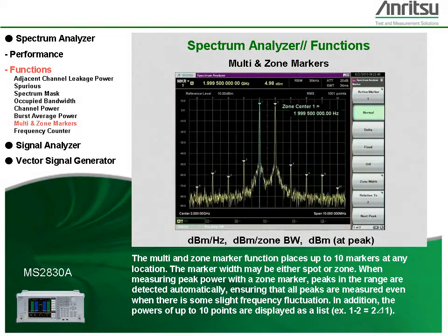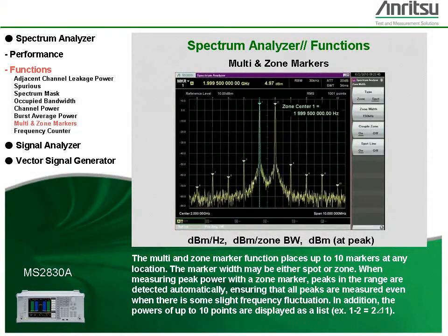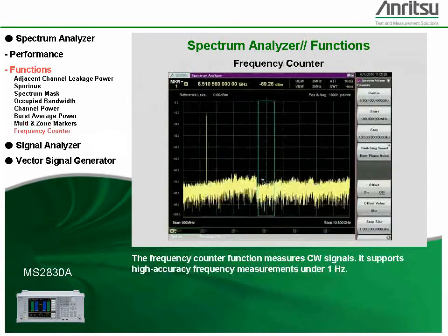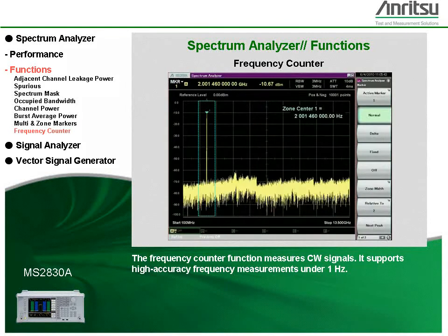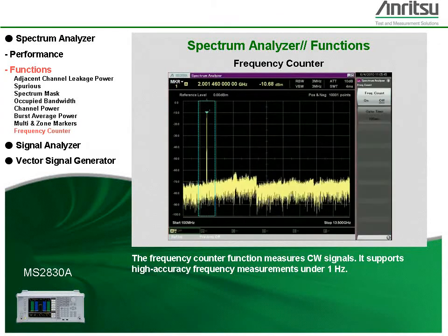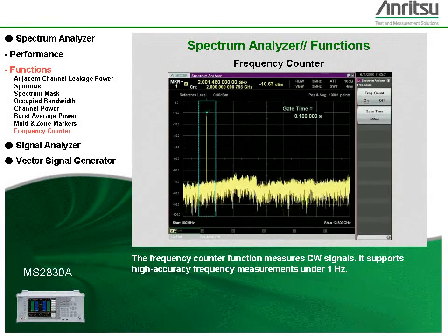In addition, the powers of up to 10 points are displayed as a list. The frequency counter function measures CW signals and supports high accuracy frequency measurements under 1 Hz.